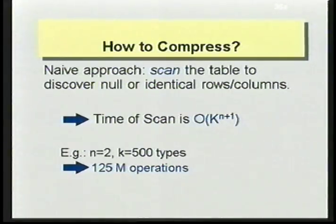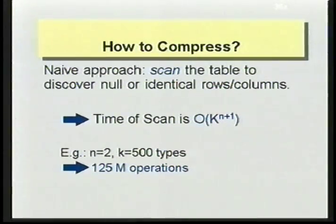How do we compress the dispatch table? The naive approach would be to scan the table and look for null or identical rows and columns. That wouldn't be a good solution because the time of such a scan would be in the order of K to the power of N plus 1, which is enormous — for instance, a two-argument method in a type hierarchy of 500 types would yield 125 million operations just to compress the dispatch table of one generic function.